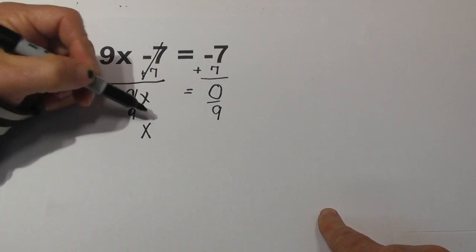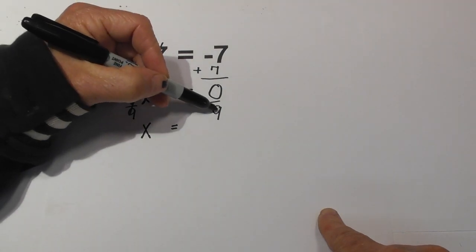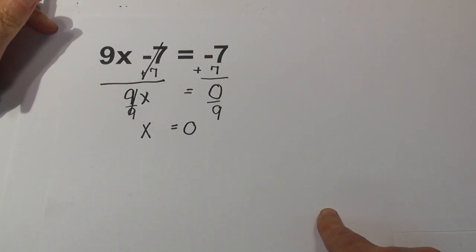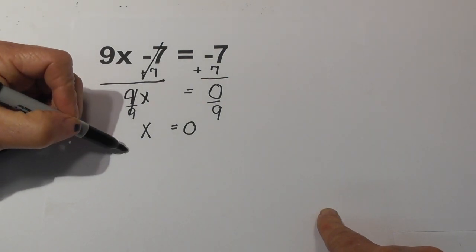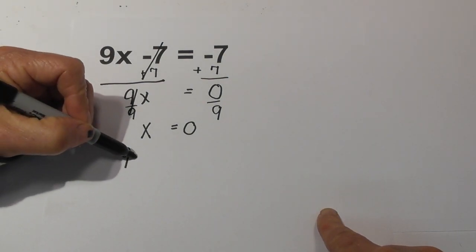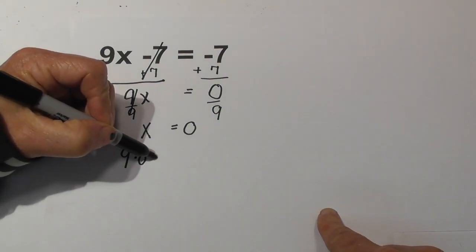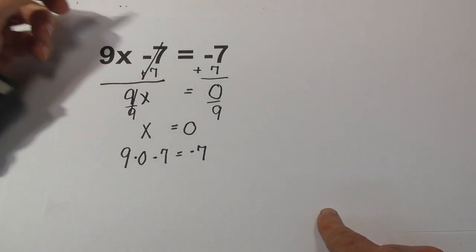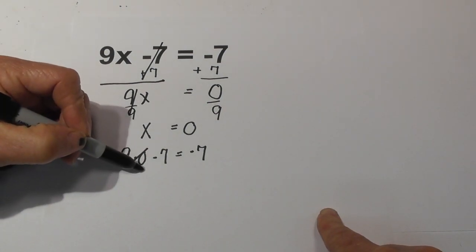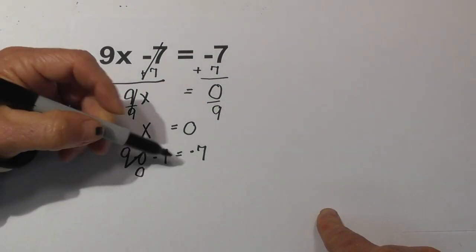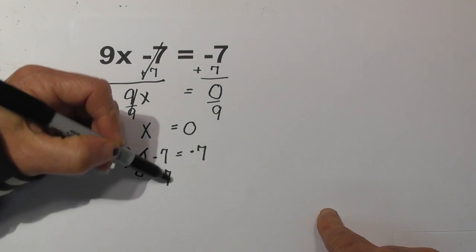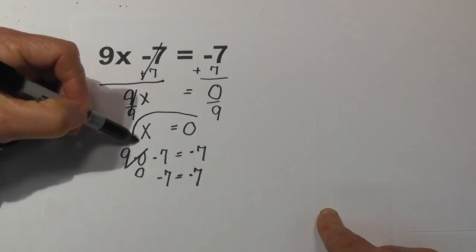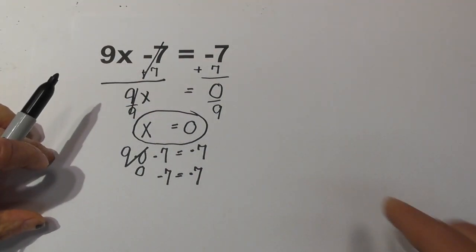These 9s cancel. Bring down the x equals. And 0 divided by 9 is 0. Kind of a strange answer. Let's plug it in. See if it works. 9 times 0 minus 7 equals negative 7. 9 times 0 is 0. So that leaves us negative 7 equals negative 7. So the answer is x equals 0.